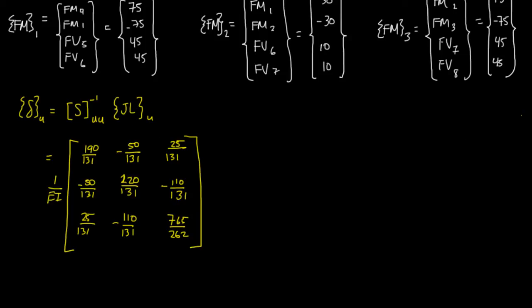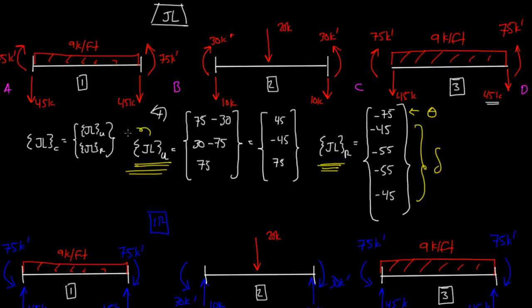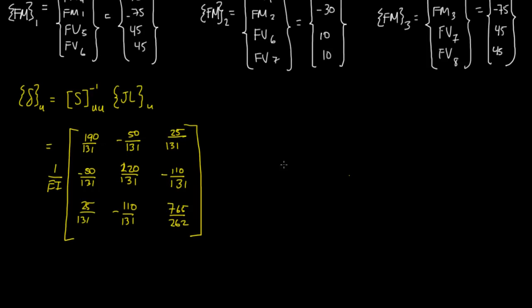And then our joint load unrestrained column vector, we actually calculated up here. This guy right here is our 45, negative 45, 75. So we put in 45, negative 45, 75. And if we solve this out, we get the unrestrained deformations happening at the unrestrained degrees of freedom.